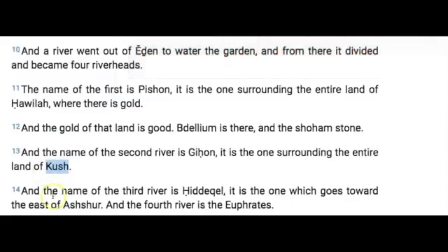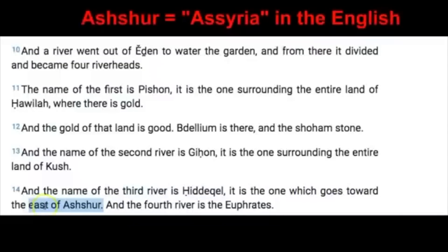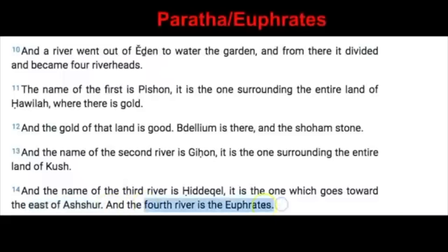Verse 14 goes on to say: the name of the third river is Kadakal — some translations today read the Tigris — and it is the one which goes toward the east of Ashashur. Please keep this in mind as we go over this documentary today, east of Ashashur, because this is going to become very handy as we've talked about in our ancient Assyria video. The fourth river is the Euphrates, as it's commonly known today; in the Yaudioth it was called Paratha.